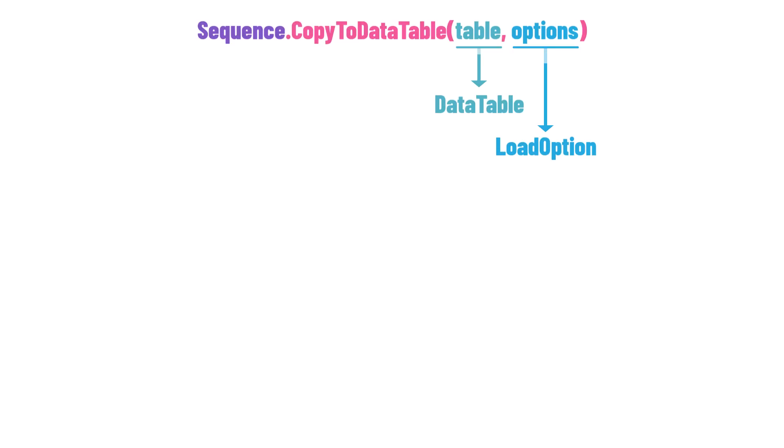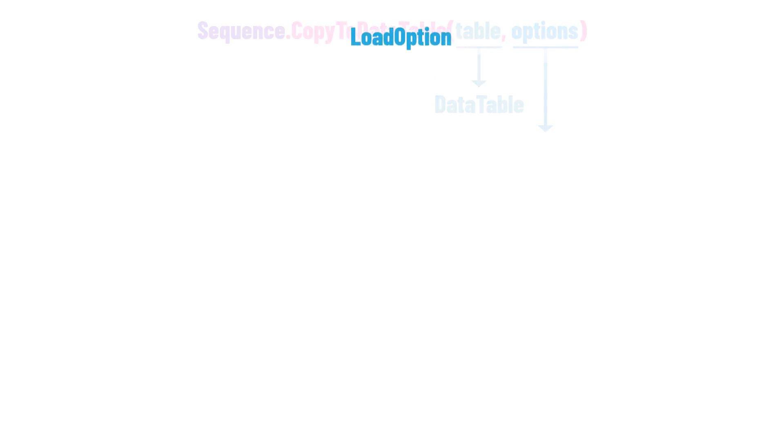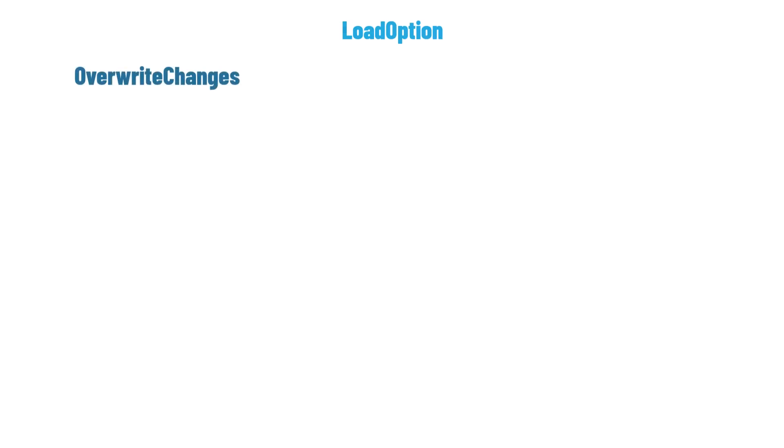The most important thing to learn about the second overload is the load option. There are three options to copy the data: OverwriteChanges, PreserveChanges, and Upsert. Let's learn more about each one.